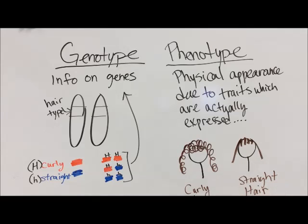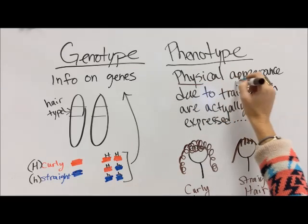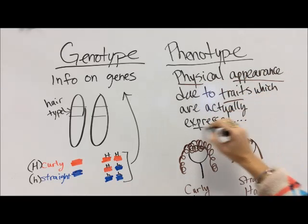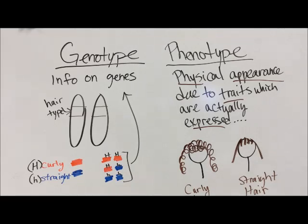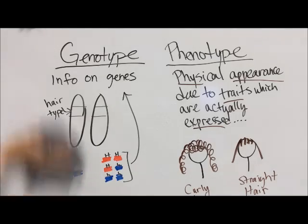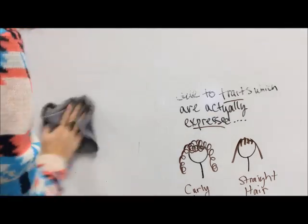It doesn't always have to be a physical appearance thing. It could be something to do with how something inside of your body works, how your blood cells work. There's a lot of options, but basically it's what trait you actually have, which most of the time is the same as your genes, but sometimes it's not, like with that big H, little H thing.